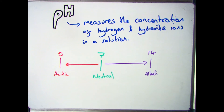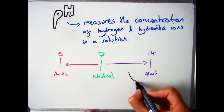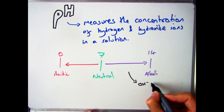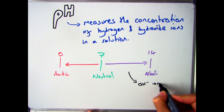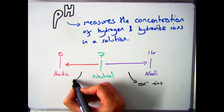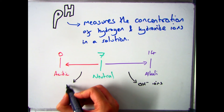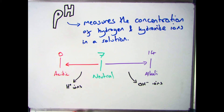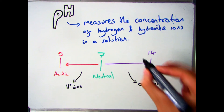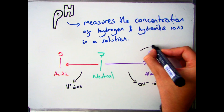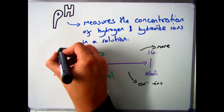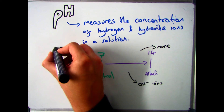As a quick recap from the first video, alkalis are substances that have OH ions in them, and acids are substances that have H plus ions in them. So as we go between 7 and 14 it becomes more alkaline, and as we go between 7 and 0 it becomes more acidic.